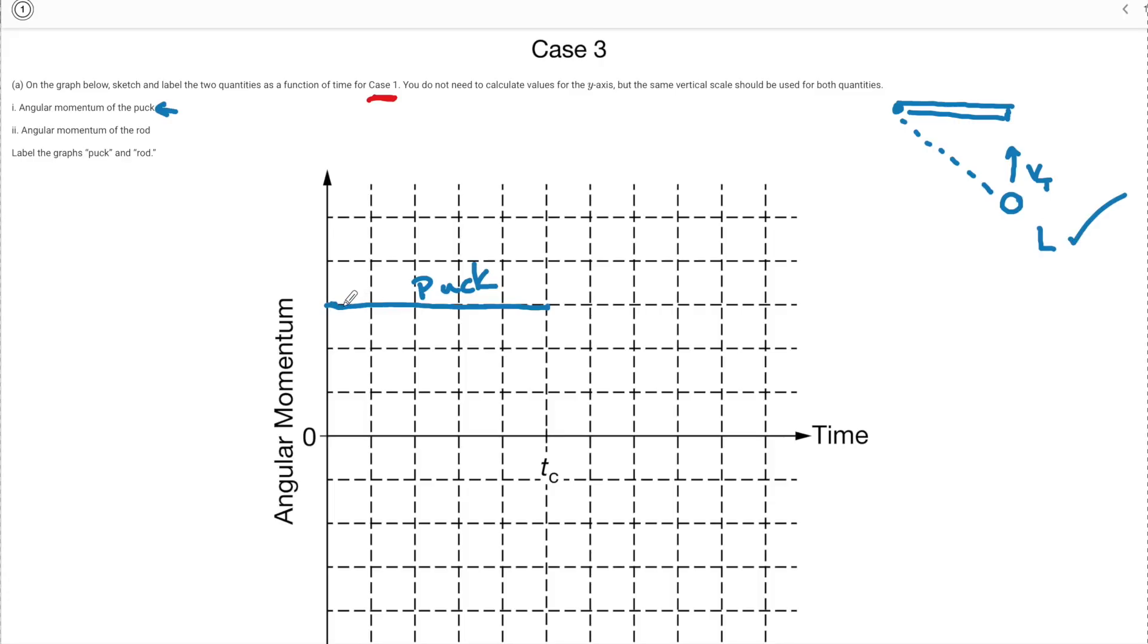So I'm just going to call this some positive angular momentum and then after contact it is going to bounce back in the other direction at a smaller angular momentum than it had. So essentially what's going to happen after time contact is the puck is going to have a negative momentum.